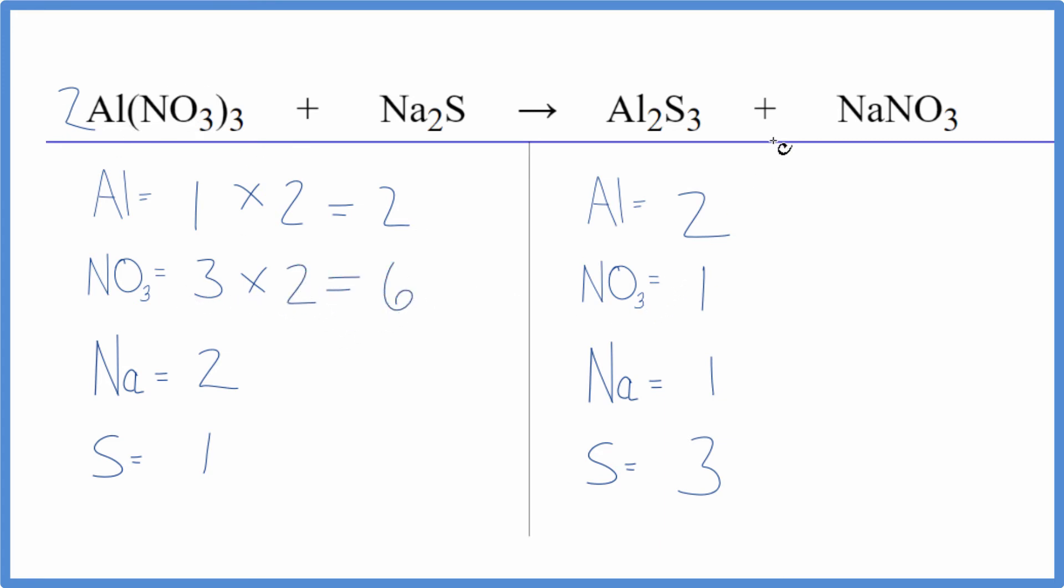We might as well just put a 6 over here. So now we have 1 times the 6 for the sodium, but we have the 1 nitrate times 6. That'll balance the nitrates.